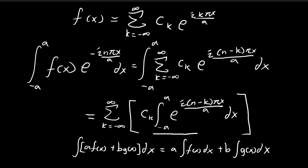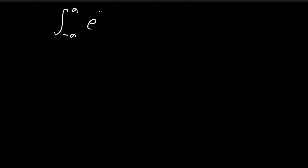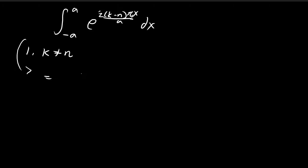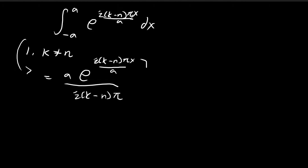Now let's focus on the integral inside the brackets: the integral from negative a to a of e to the power of i(k minus n) pi x divided by a, dx. We consider two cases. The first case is when k is not equal to n. When k is not equal to n, we integrate this — since it's an e to the power of x term, we retain the expression and flip the constants attached to x. This is then evaluated from negative a to a.